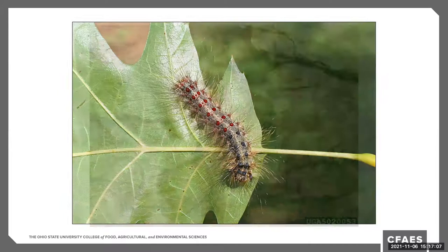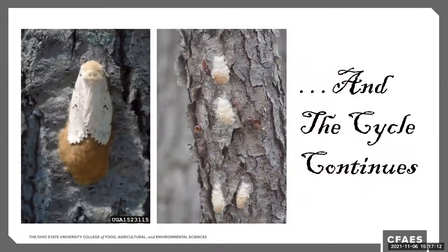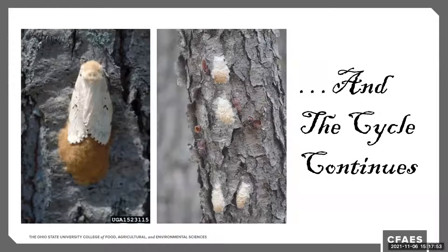Once the caterpillars are finished feeding, they will pupate, and then adults will emerge. The photo here is a female laying her egg mass. Females are more white to off-white and tend to be larger; males are more brown with very feather-like antennae. The males will fly, while the females really don't — she gives off a pheromone and the male comes to find her. They mate, she lays eggs, and the egg masses spend the remaining summer into fall and overwinter until they hatch the following year, and that cycle continues.